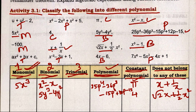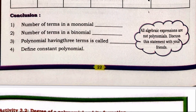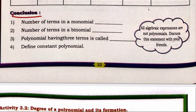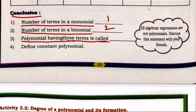To summarize the classifications: some expressions are binomial, trinomial, or polynomial. An expression with only one term is a monomial. An expression with two terms is a binomial. An expression with three terms is a trinomial. An expression with more than three terms is called a polynomial. Number of terms in a monomial is one, binomial is two, and trinomial is three.